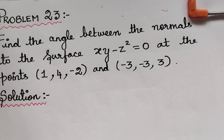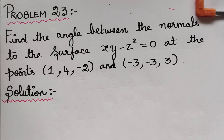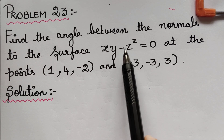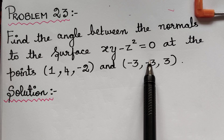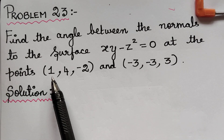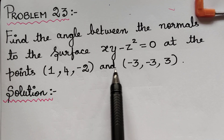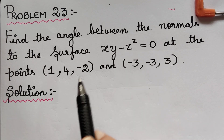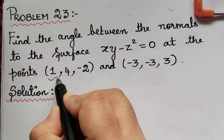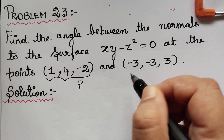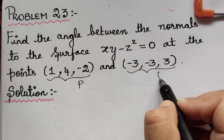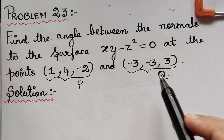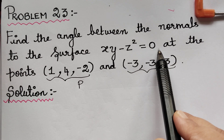We have a problem where we have to find the angle between the normals to the surface xy minus z squared equals 0 at the points P(1, 4, -2) and Q(-3, -3, 3). These are the two different points. Using the formula, we have to find the angle between the normals to the given surface.